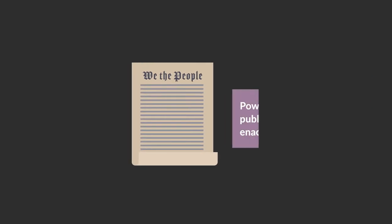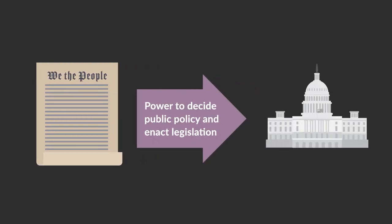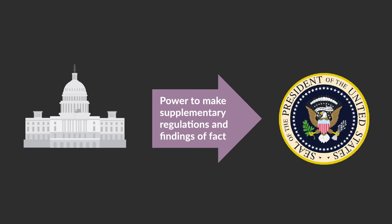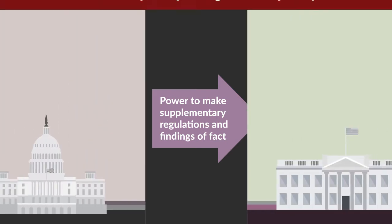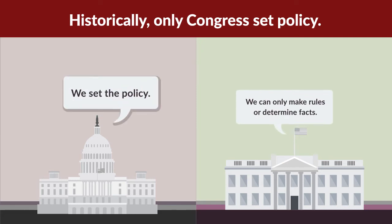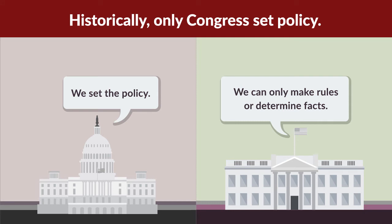The Constitution gives Congress the power to decide public policy and enact legislation. But these policy issues can be very complex, and Congress often can't write legislation detailed enough to address every possible situation. Congress has often given the executive branch the power to make supplementary regulations to help administer congressional legislation. The executive branch may also be empowered to make findings of fact to determine how it will apply congressional policy in a given situation. The majority opinion examined several examples dating back to the early 1800s. In each of these cases, Congress set the policy, and the executive branch was given only the power to make rules or fact-finding determinations.